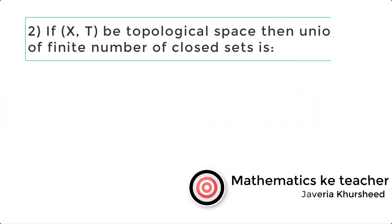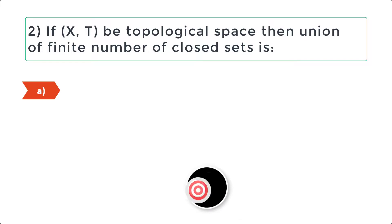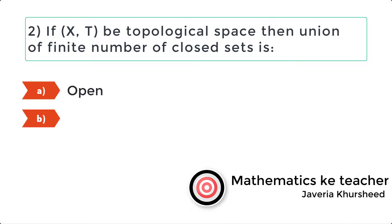Question 2: If X, T be topological space then union of finite number of closed sets is. Options: A. Open, B. Closed, C. Finite, D. Infinite.